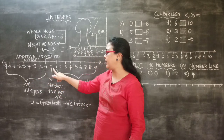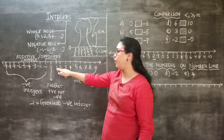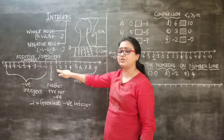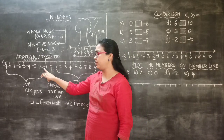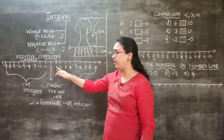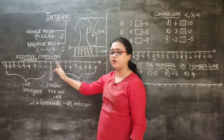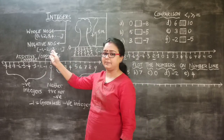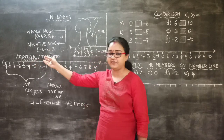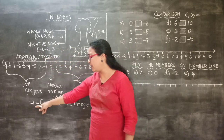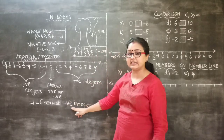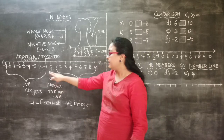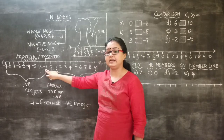Minus 1 is the opposite of plus 1, and 1 is the opposite of minus 1. Similarly, 2 is the opposite of minus 2. In mathematical terms, we call this the additive inverse. One important thing to remember: minus 1 is the greatest negative integer.